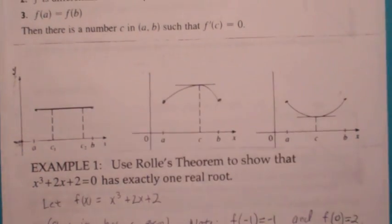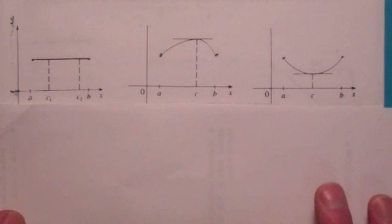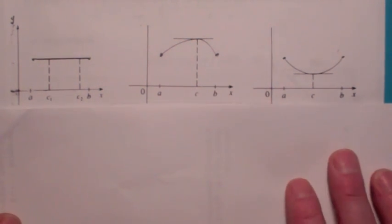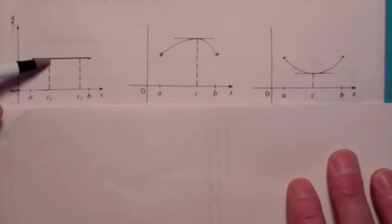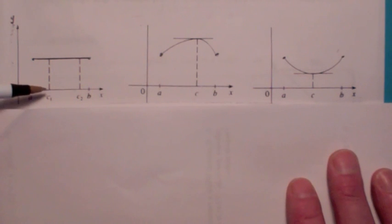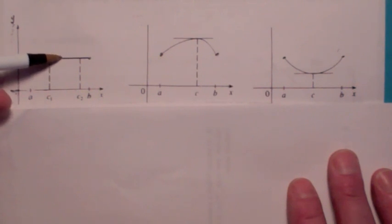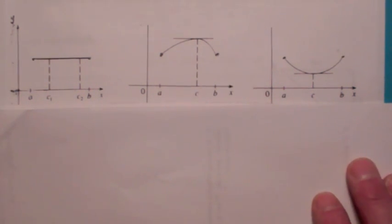On the interval a to b, let's suppose f(x) is a constant function. Clearly, it's a continuous and differentiable function. Is there a value x equals c between a and b where f'(c) is zero? The answer is: at every value of x between a and b the derivative is zero. So that satisfies the conclusion.